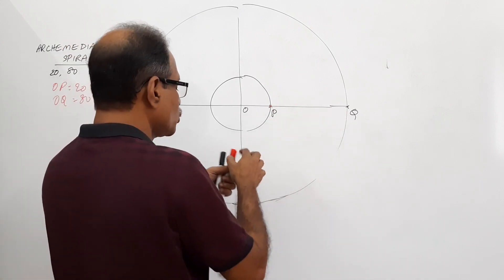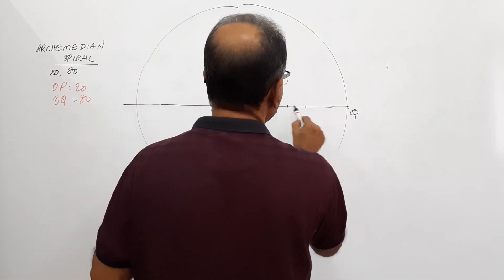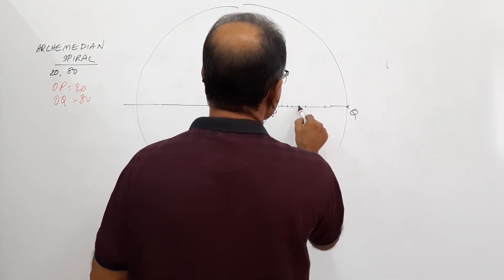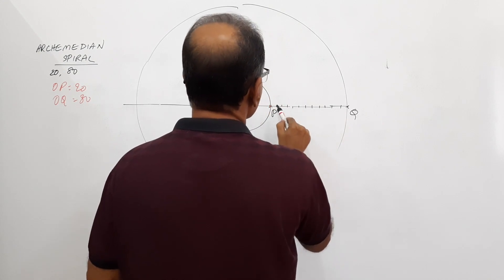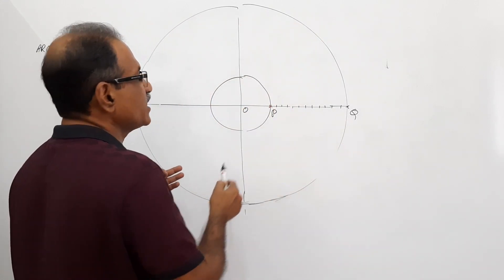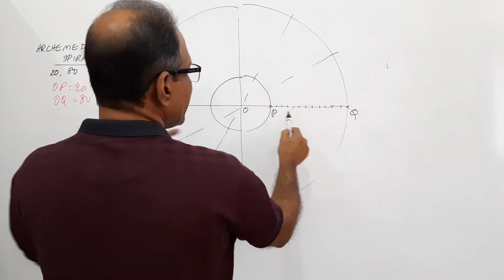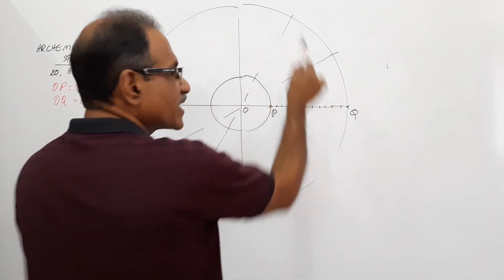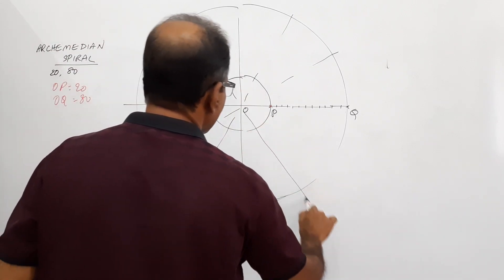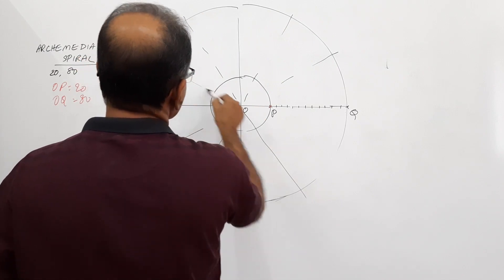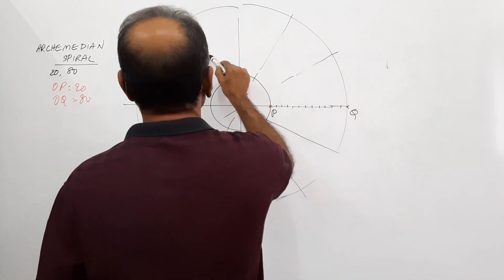This is an Archimedean spiral. I divide this distance PQ into, say, 12 equal parts. And also, this angle 360 degrees into 12 equal parts. If you divide this into 20 equal parts, the circle must be divided into 20 equal parts. 12 is quite good, reasonably good. Very light lines. Don't draw dark lines. Those lines must be reasonably light.